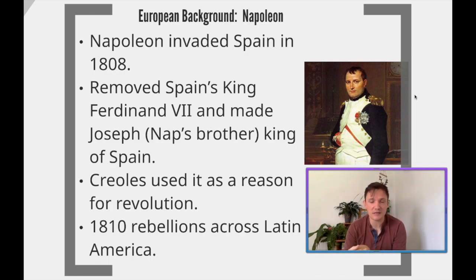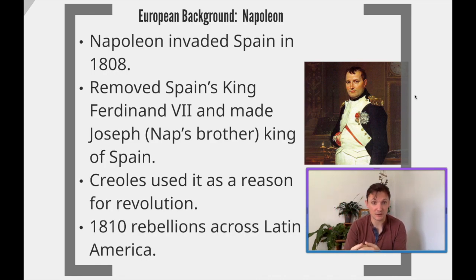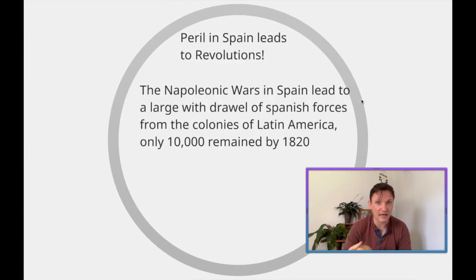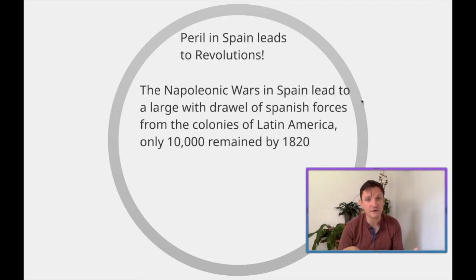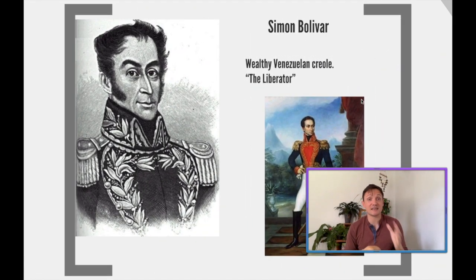The Creoles use Napoleon's invasion of Spain as their reason for revolution. They're like: the Peninsulares are distracted, they're all pulling out to go fight Napoleon back in Spain — now's our chance. In 1810, rebellions break out all over Latin America. The Napoleonic Wars in Spain lead to a huge withdrawal of Spanish forces out of their colonies, so only about 10,000 remained in Latin American colonies by about 1820. The Creoles use this as a chance to lead big military forces.